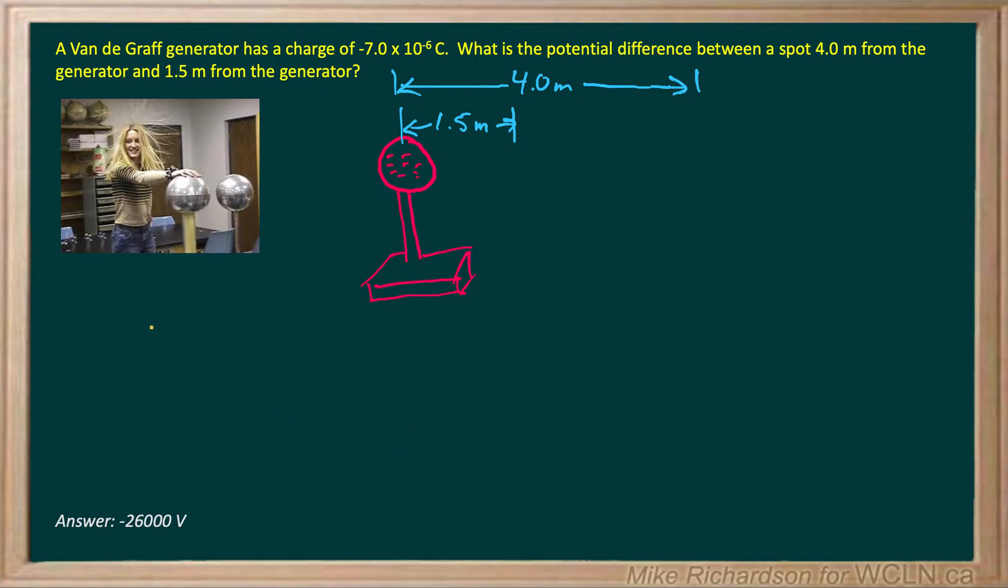And we know that to find the potential or the voltage on a point charge, we use KQ over R. Very simple formula. Anything divided by R is considered to be a spherical shape in this unit.